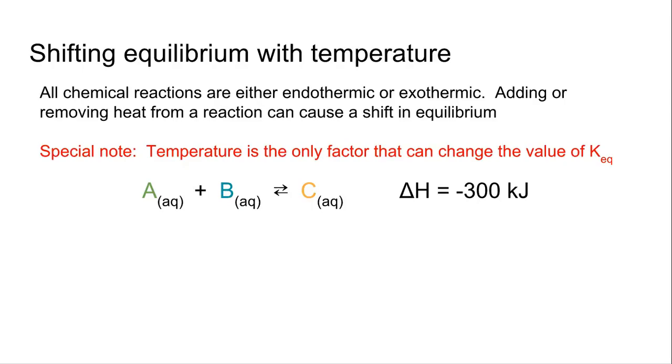Now that we know that heat is given off, we can write heat as a product. So essentially you have A plus B yielding C plus 300 kilojoules of heat. Now that we know that heat is given off and is a product, we can actually use the heat to change that equilibrium.